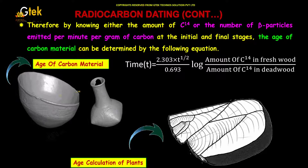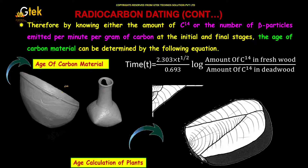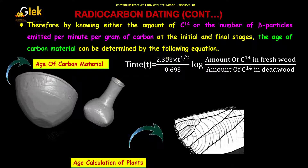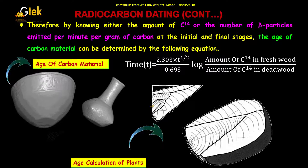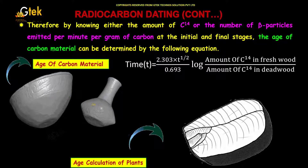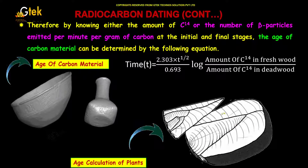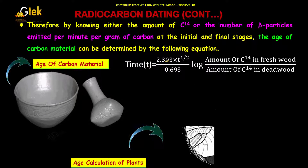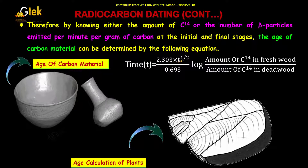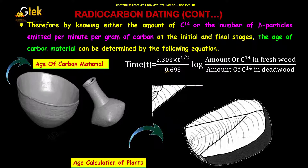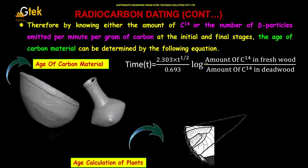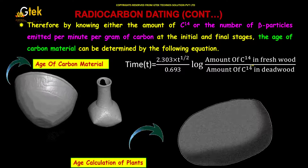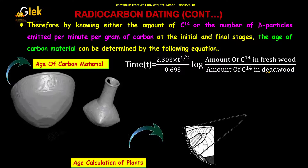By knowing either the amount of carbon-14 or the number of beta particles emitted per minute per gram of carbon at the initial and final stages, the age of the carbon materials can be determined by the following equation: time equals 2.303 divided by 0.693, multiplied by the log of the amount of carbon-14 in fresh wood divided by the amount of carbon-14 in dead wood.